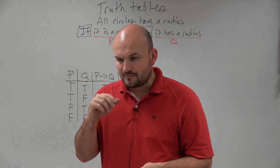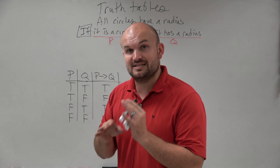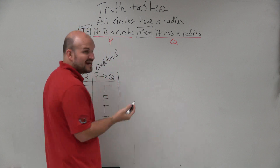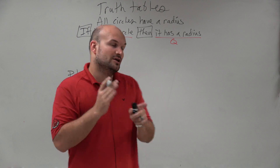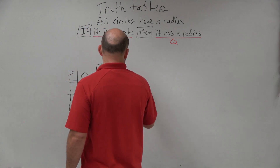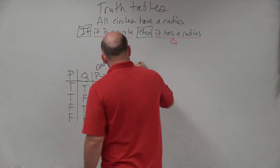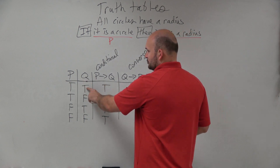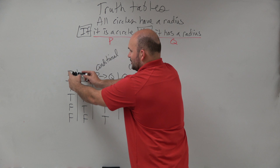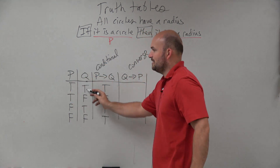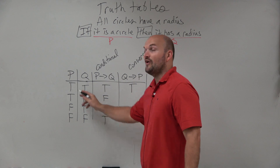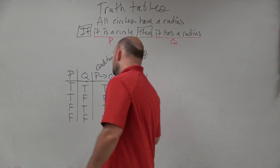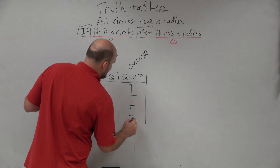Now let's go through the different conditional statements. Here is a regular conditional statement. To find the converse, remember the converse is just swapping p and q. So the converse is if q, then p. For the converse: true-true is true, false-true is true, true-false is false, and false-false is false.